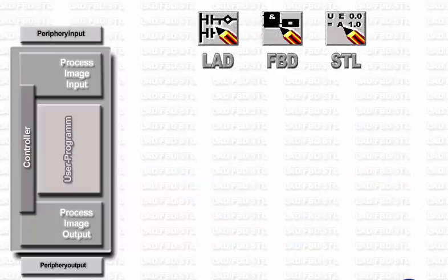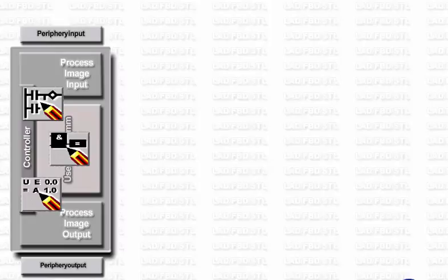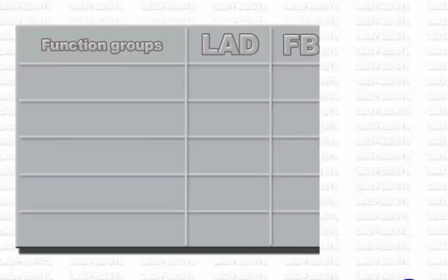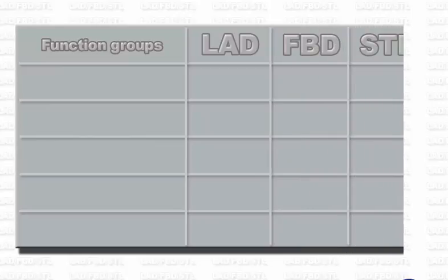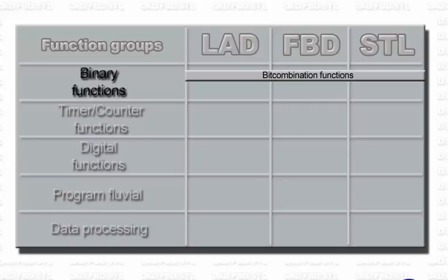Depending on the program structure and the application case, you can even mix all three languages within the same CPU. These three languages have a representation format that makes them easy to learn, but offer at the same time an extensive inventory of functions or commands which allow you to handle almost any typical automation task. Several function groups are distinguished depending on the task in hand. In the function group of binary functions, all combination tasks can typically be resolved with binary operands. Special commands such as edge detection help to speed up the execution.